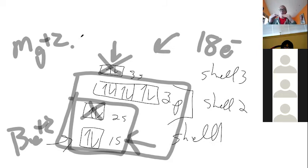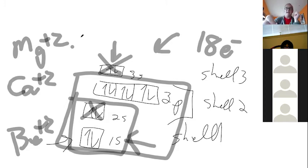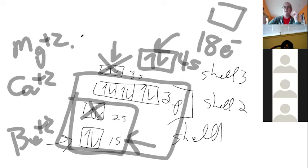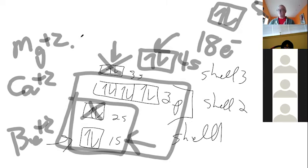Now at N equals six, how many orbitals can we find total? We're in the sixth shell. The subshells in the sixth shell are 6S, 6P, 6D, and 6F — all four subshells. Their L values are zero, one, two, three respectively. So 6S has one orbital, 6P has three orbitals, 6D has five orbitals, and 6F has seven orbitals — that's 16 orbitals total. With two electrons each, that's a maximum of 32 electrons.